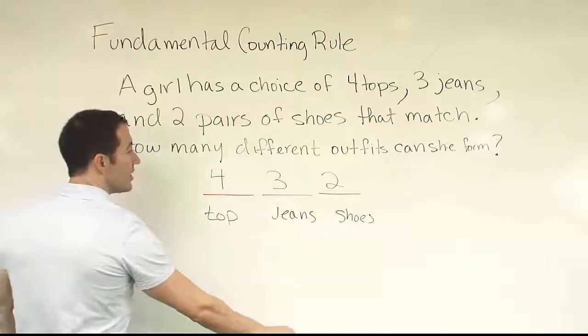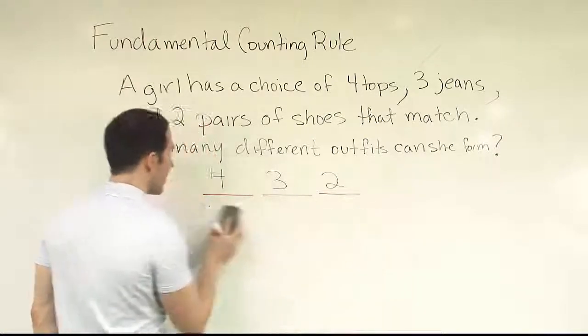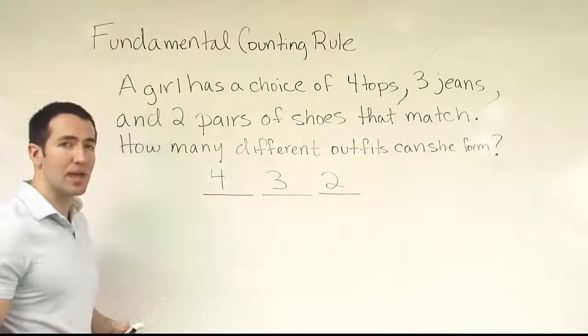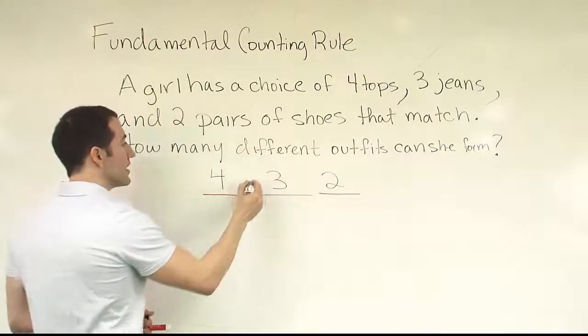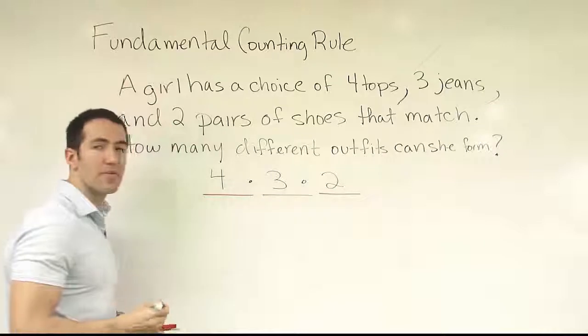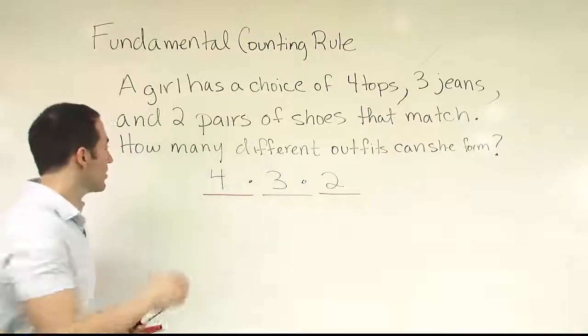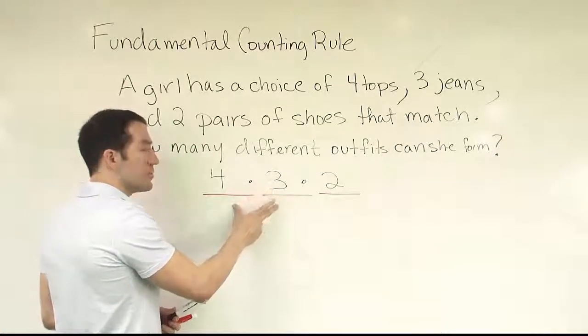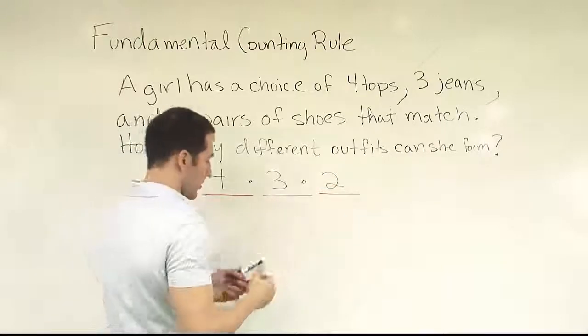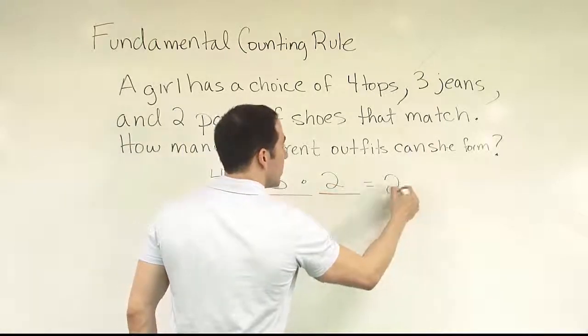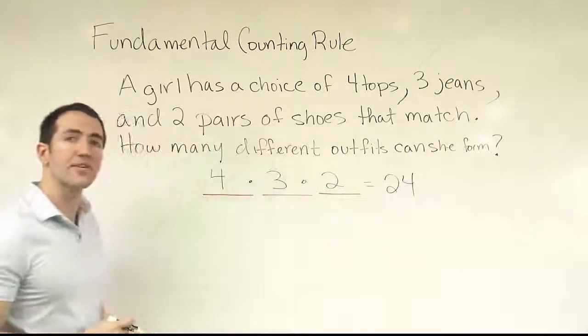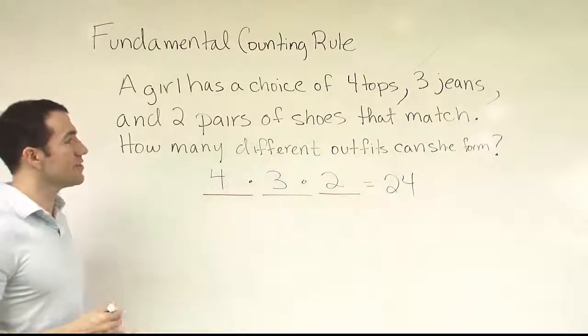Now once you have that listed out, the last step of the process for fundamental counting rule is to simply multiply. So we're going to multiply these numbers together, and that gives us the total number of possible outcomes. So we'll have four times three is twelve, and twelve times two, twenty-four ends up being your final answer. So there are twenty-four unique outfits she can form.